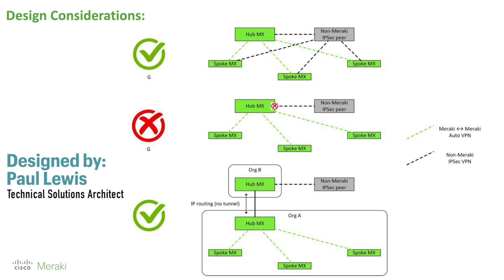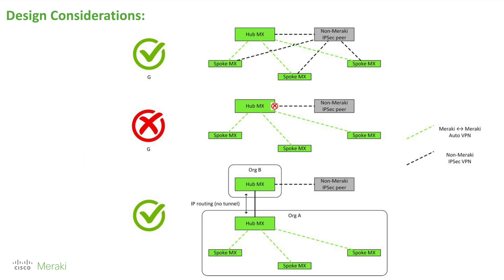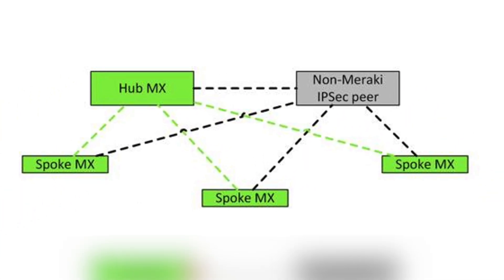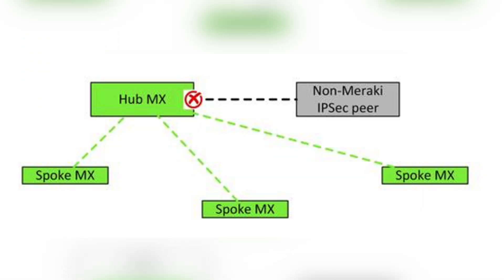Before we end this video, it is worth mentioning that there are design considerations when we use non-Meraki VPN tunnels. In scenario A, we must create tunnels from all MX SD-WAN fabric sites to non-Meraki VPN sites to have full reachability to non-Meraki VPN subnets, and there might be a scalability issue if we have a large SD-WAN network. The second scenario shows that we cannot redistribute non-Meraki VPN subnets over the SD-WAN fabric, so only the site that has a built IPsec tunnel can have reachability to non-Meraki VPN subnets.